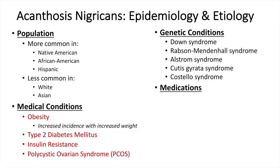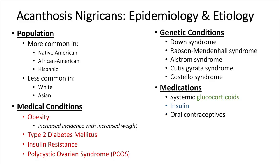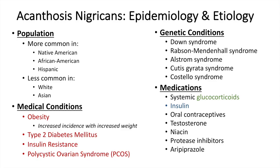There are also medications that increase the risk of acanthosis nigricans, and these medications typically cause misutilization of glucose or insulin. Such things as systemic glucocorticoids can cause abnormal glucose utilization. Insulin itself can actually increase the likelihood of acanthosis nigricans. Some other things include oral contraceptives, testosterone, niacin, protease inhibitors, and aripiprazole — an atypical antipsychotic — which can all increase the likelihood of developing acanthosis nigricans.